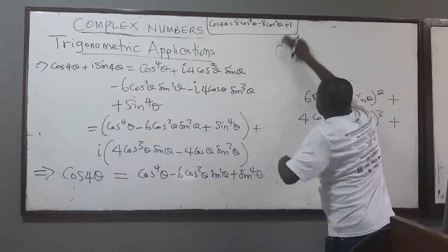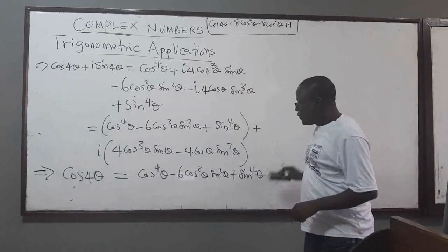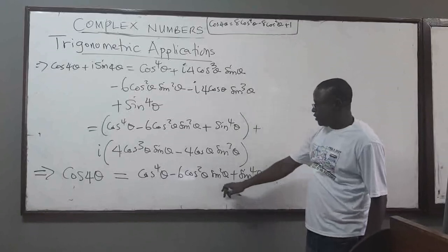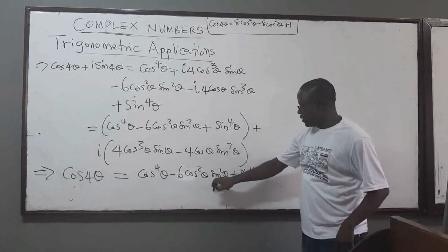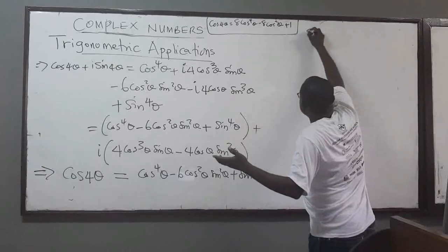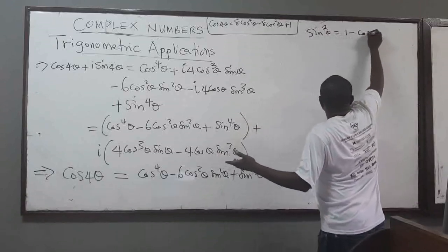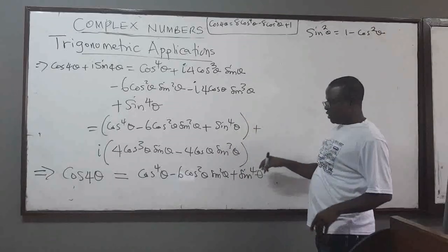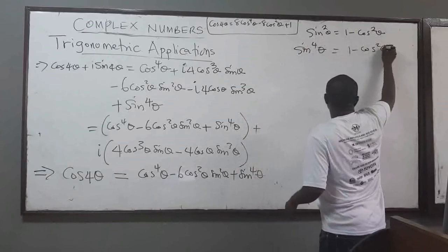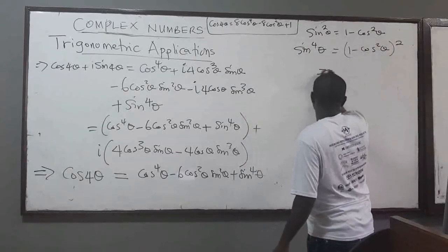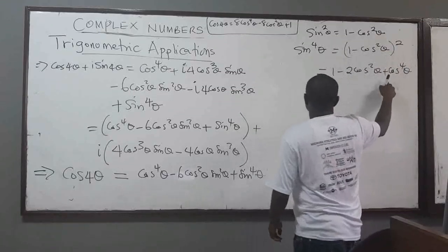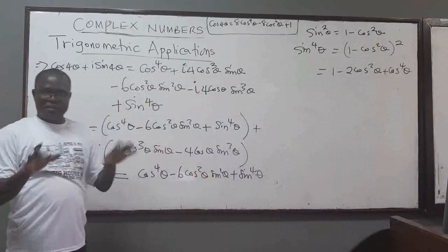The expression we want to prove has only cosine terms — no sin. So we need to use our trigonometric identities to rewrite everything in terms of cos. We know that sin²θ = 1 − cos²θ, and sin⁴θ = (sin²θ)² = (1 − cos²θ)², which expands to 1 − 2cos²θ + cos⁴θ. We substitute these back in.